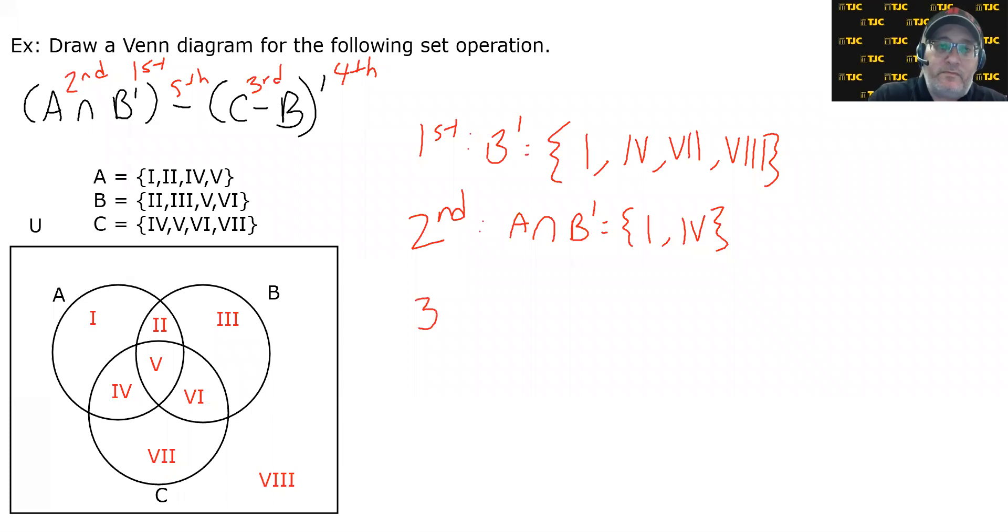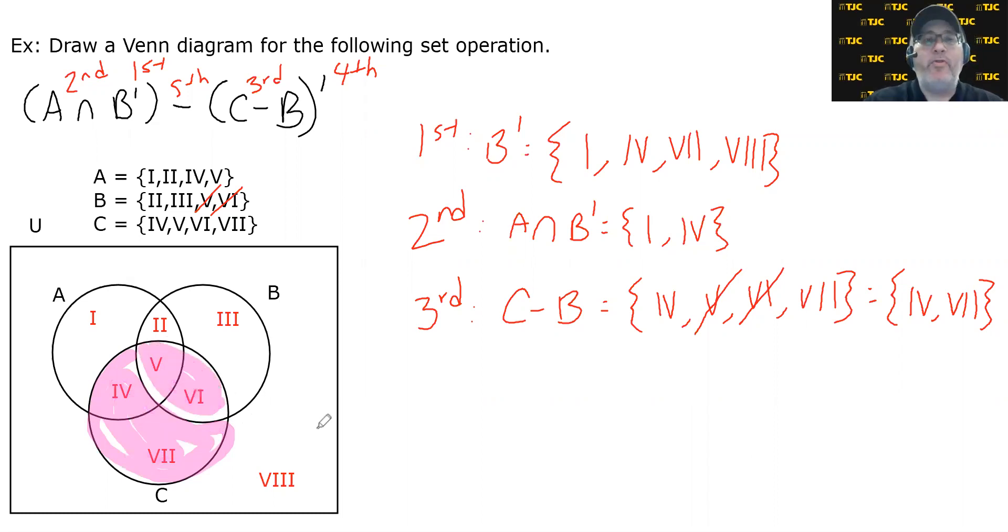Let's move to the third step, which is to do C minus B. If we were to do this at the element level, we would start with set C, which contains 4, 5, 6, and 7. And from that, we would cross out anything that is common to B. It looks like that it would be 5 and 6 that would get crossed out because 5 and 6 are also in set B. So it looks like C minus B is going to be regions 4 and 7. And again, that might have been easy to ascertain at the Venn diagram level.